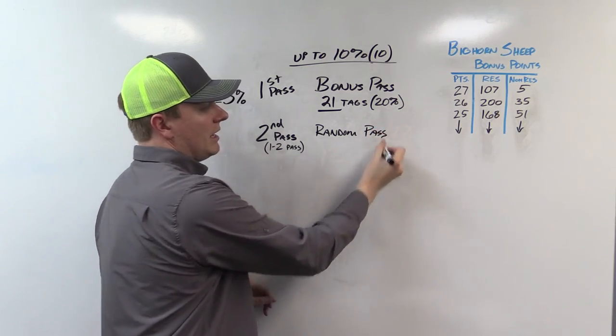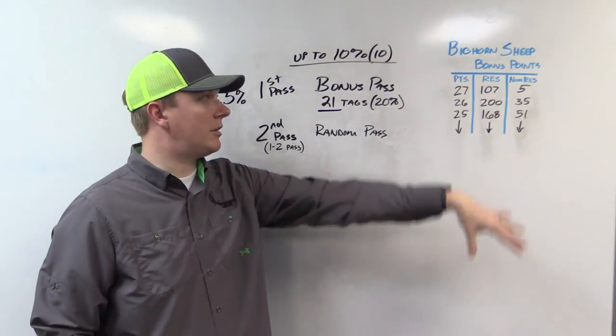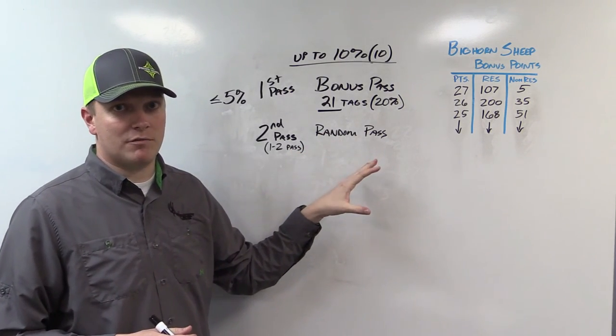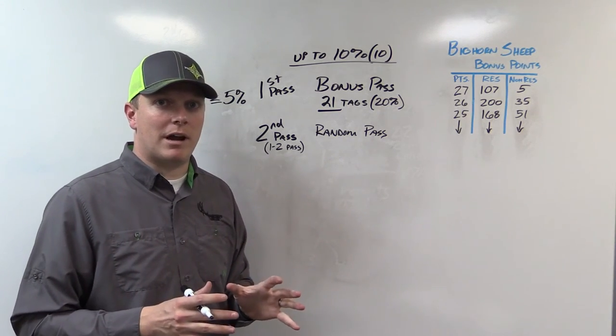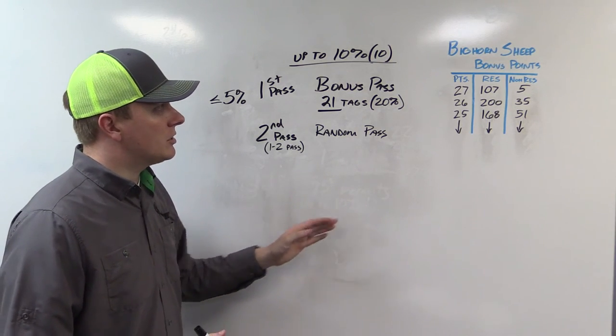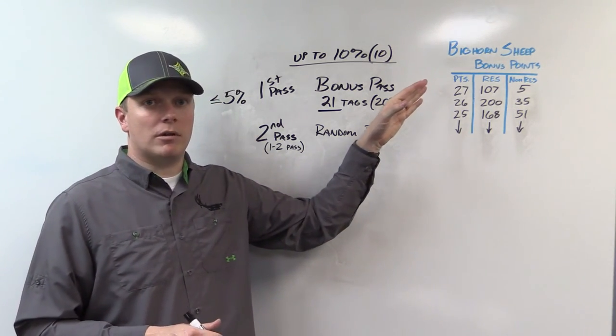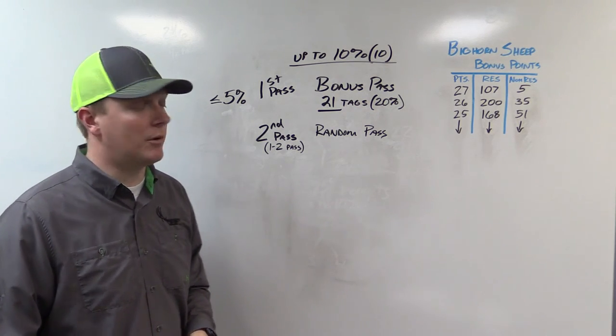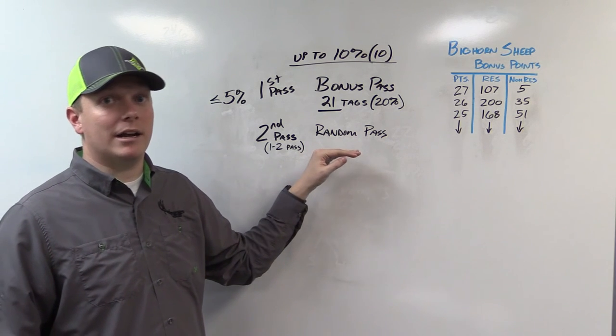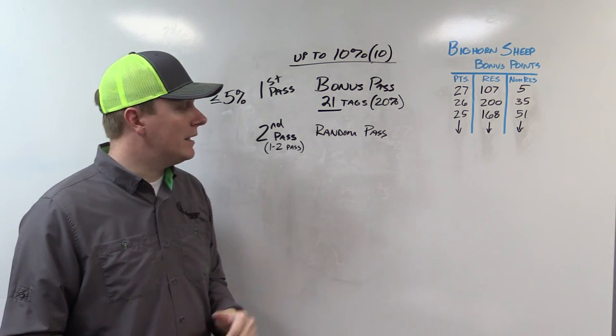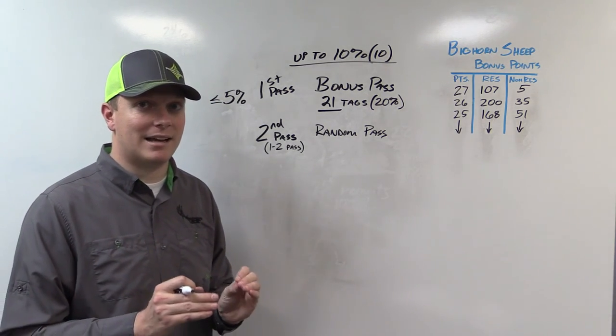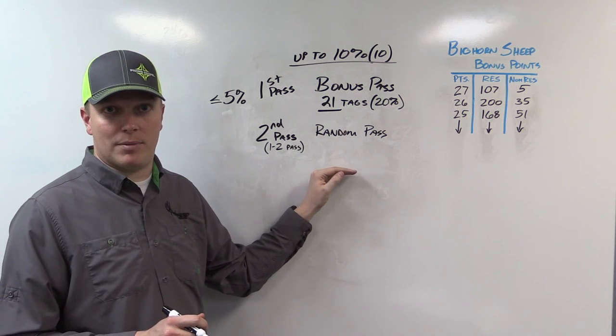In the random pass they're going to take everybody. They're going to clear their draw pool, clear the random numbers, start over. They're going to take everybody regardless of point level and award them as many random numbers as they have bonus points plus their year that year's application. So the guys with 27 points will get 28 chances at getting the lowest random number. They randomize them. They go to the lowest guy and they're going to start looking at his first and second choice. Now your first or second choice could be a desert, could be a rocky. As long as that tag is still available you can draw in this random pass.